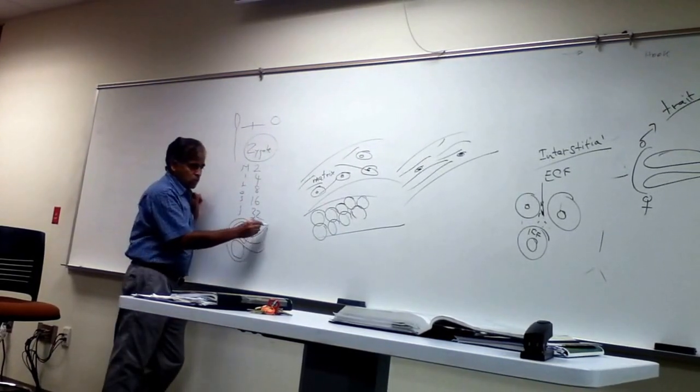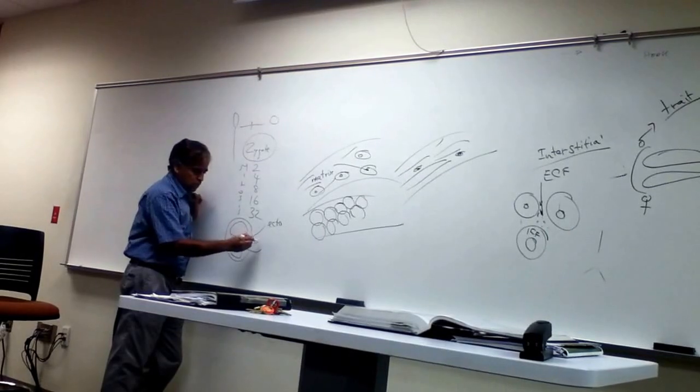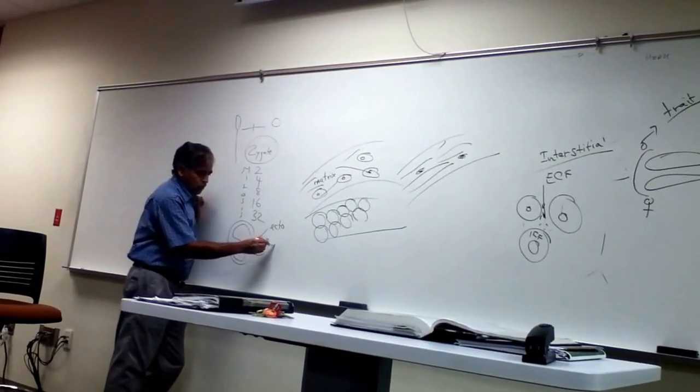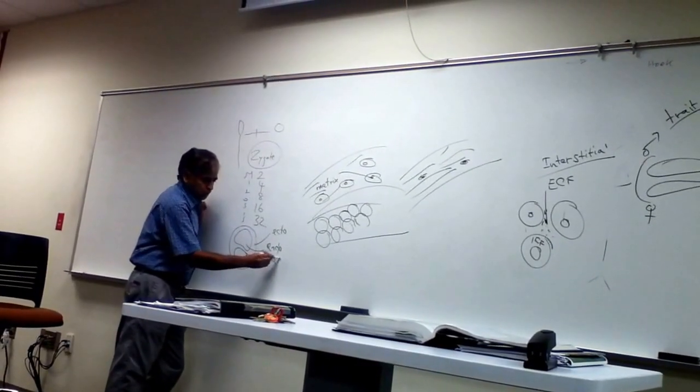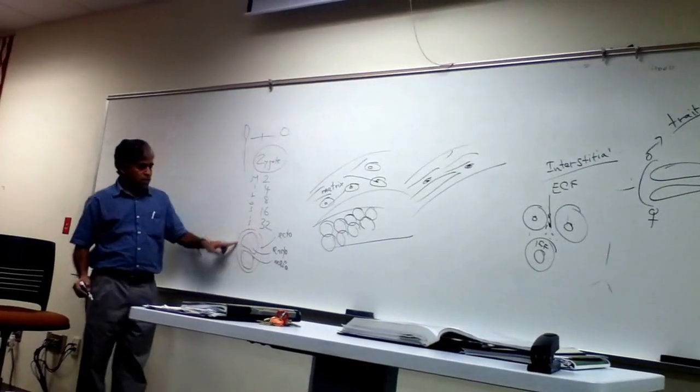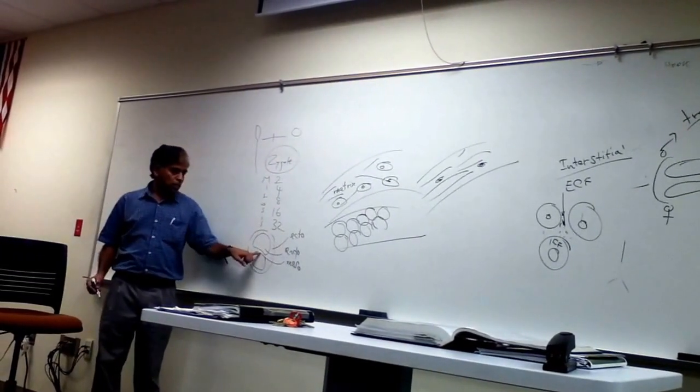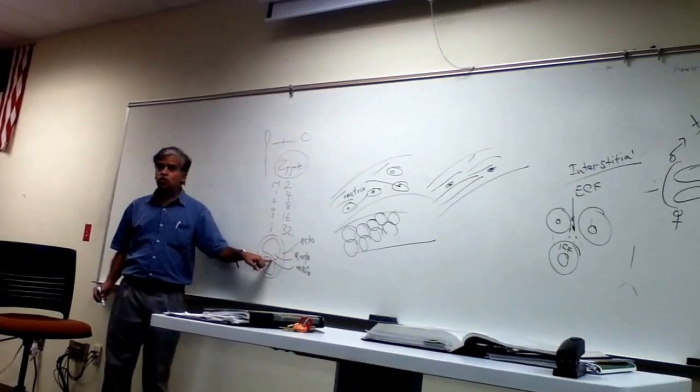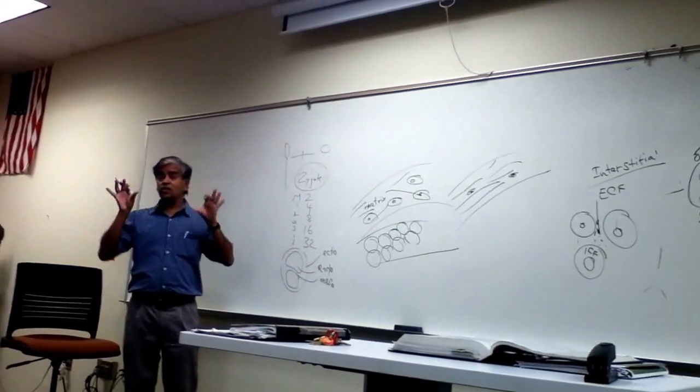The outermost layer will be the ectoderm. You see those words, ecto, endo, and mesoderm. Ectoderm is this outer layer, more inside, endo, in the middle, in between, is the mesoderm. These are the first three germ layers.